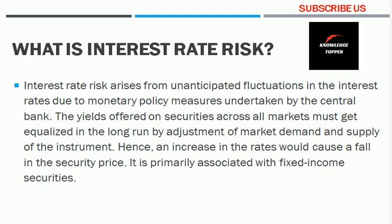Consider a situation to understand interest rate risk easily. Suppose there is a sovereign government bond that offers a fixed coupon payment of six percent annually on a principal value of one thousand dollars. Multiplying one thousand by six percent gives you sixty dollars of annual interest payment.